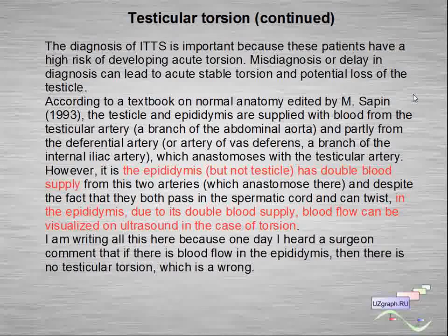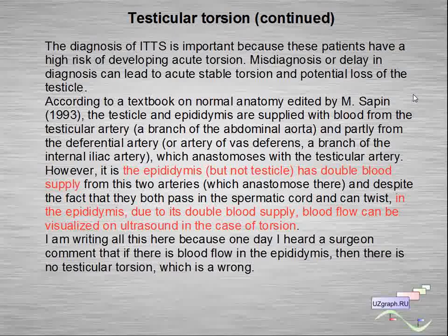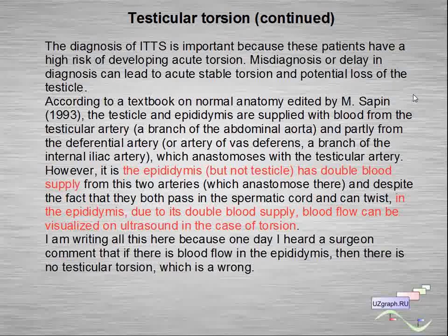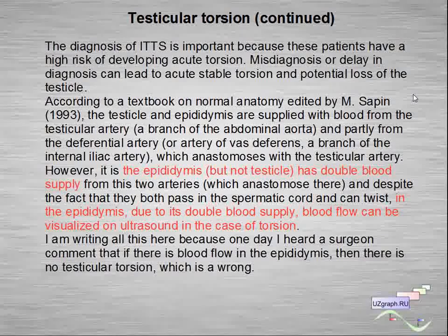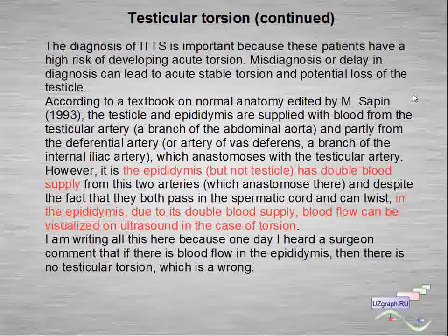According to the textbook of normal anatomy edited by Sapin, the testicle and epididymis are supplied with blood flow from the testicular artery, a branch of the abdominal aorta, and partly from the deferential artery, or arteria vas deferens, a branch of the internal iliac artery, which anastomoses with the testicular artery. However, it is only the epididymis, not the testicle, that has double blood supply from these two anastomosing arteries. Despite the fact that both pass in the spermatic cord and can twist, it is only in the epididymis that blood flow can be visualized on torsion. I am noting this because I once heard a surgeon comment that if there is blood flow in the epididymis, there is no testicular torsion — which is wrong.